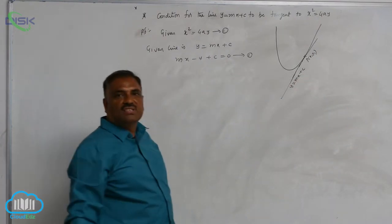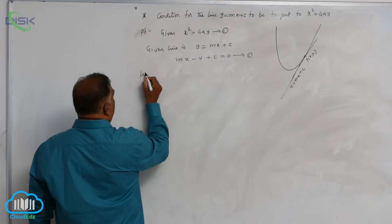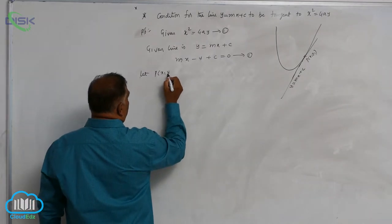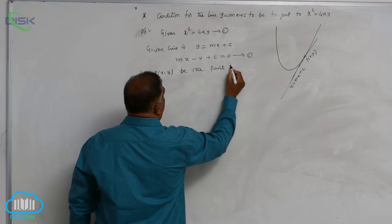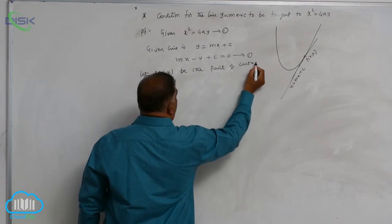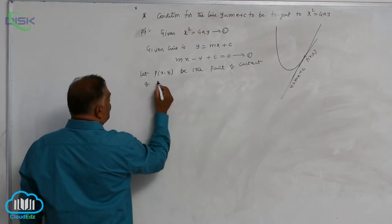So let us specify: let P(x1, y1) be the point of contact, point of contact of 2 with 1.